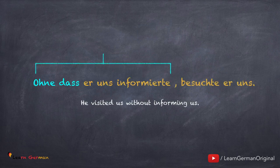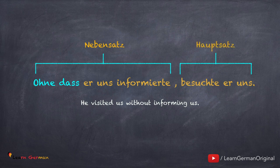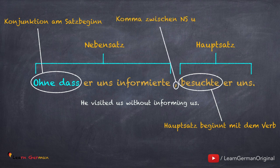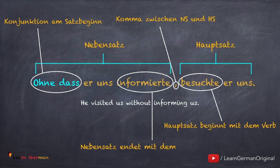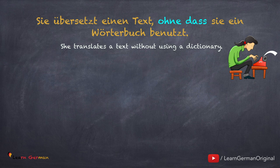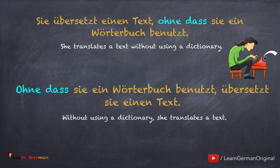Man kann den Satz auch so formulieren: Ohne dass er uns informierte, besuchte er uns. Hier steht der Nebensatz vor dem Hauptsatz. Die Konjunktion ohne dass steht am Satzbeginn. In dem Nebensatz steht das Verb am Ende und in diesem Fall beginnt der Hauptsatz mit dem Verb. Zwischen beiden Sätzen steht ein Komma. Noch ein Beispiel: Sie übersetzt einen Text, ohne dass sie ein Wörterbuch benutzt. Ohne dass sie ein Wörterbuch benutzt, übersetzt sie einen Text.